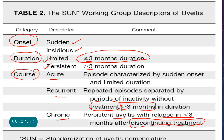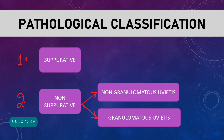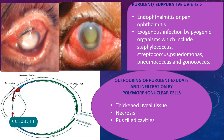Based on pathology, uveitis is classified into two types: suppurative uveitis, in which there is purulent exudation (pus), and non-suppurative uveitis, in which there is no purulent exudation. Non-suppurative uveitis is further divided into non-granulomatous and granulomatous uveitis.